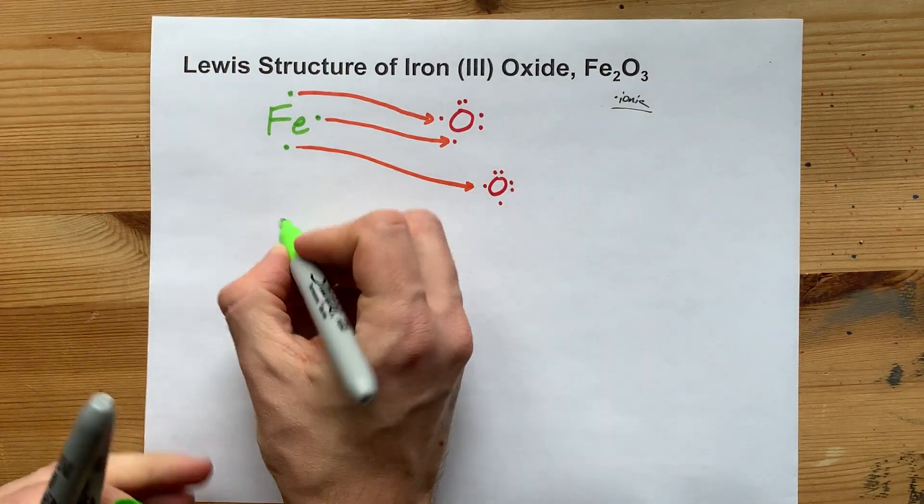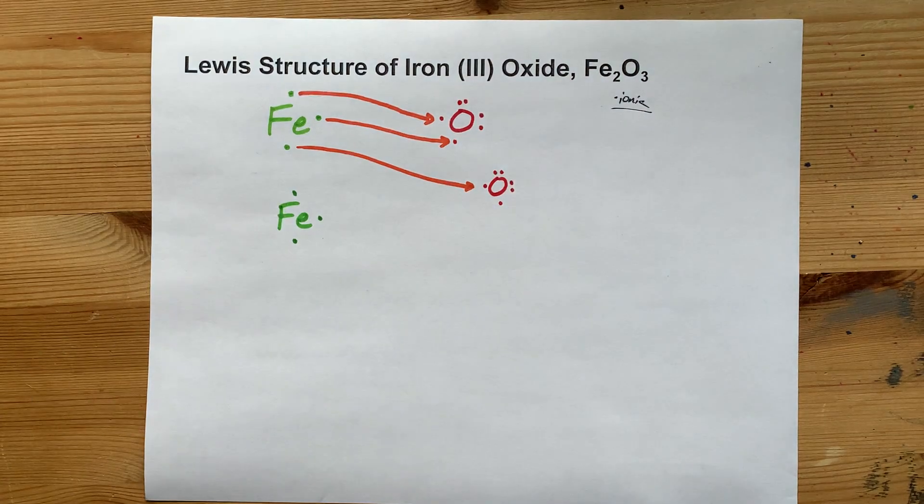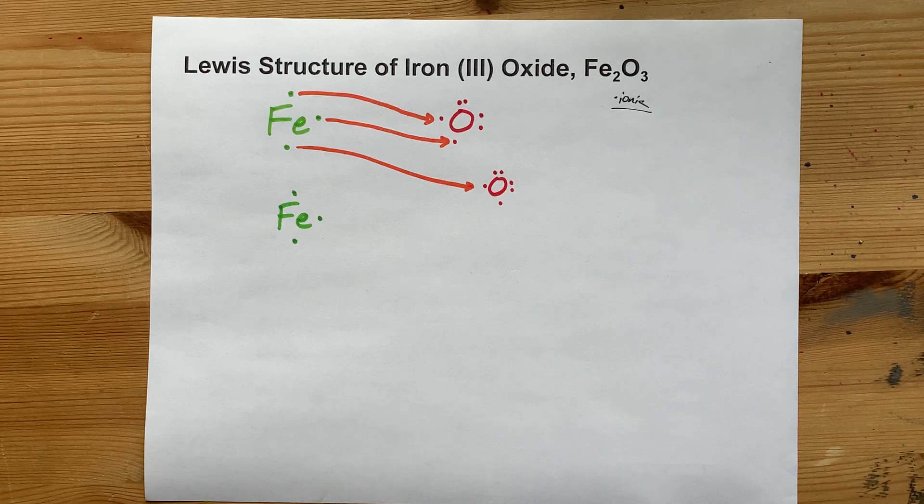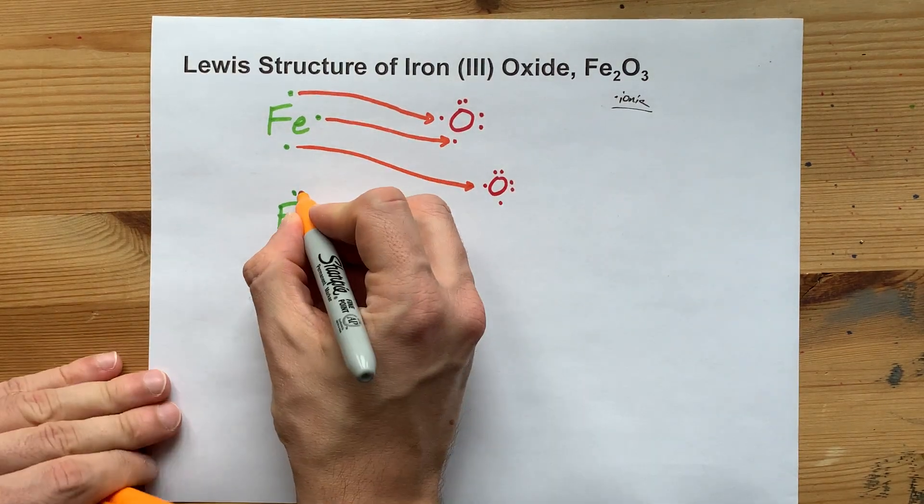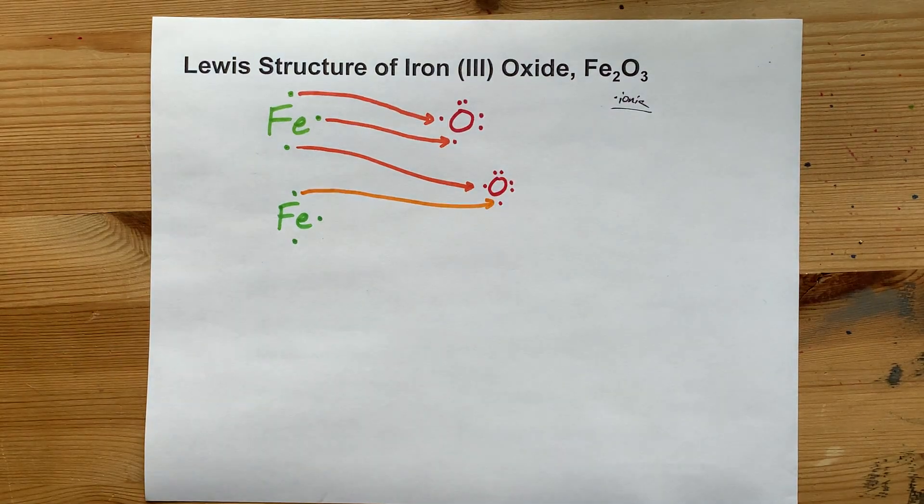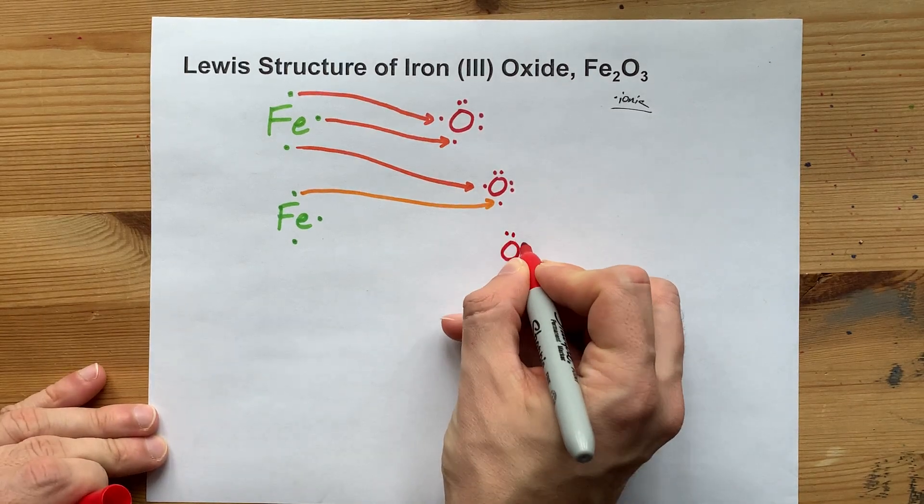So, in that case, you need another iron with its 3 valence electrons. Remember, it's 3 because the charge is 3. And so, that electron from iron will go to that oxygen to complete its octet. And unfortunately, the iron still has 2 leftover electrons.